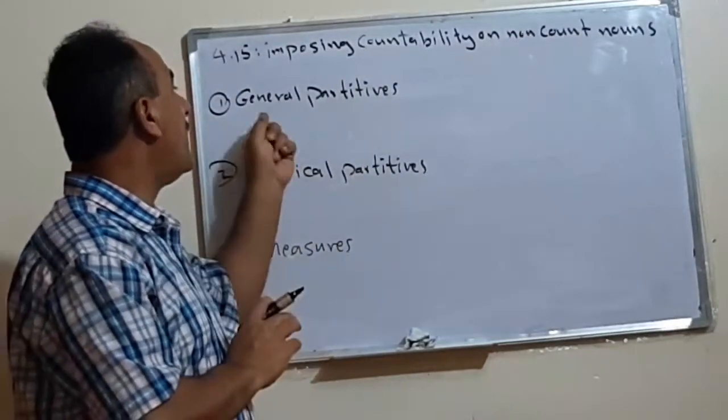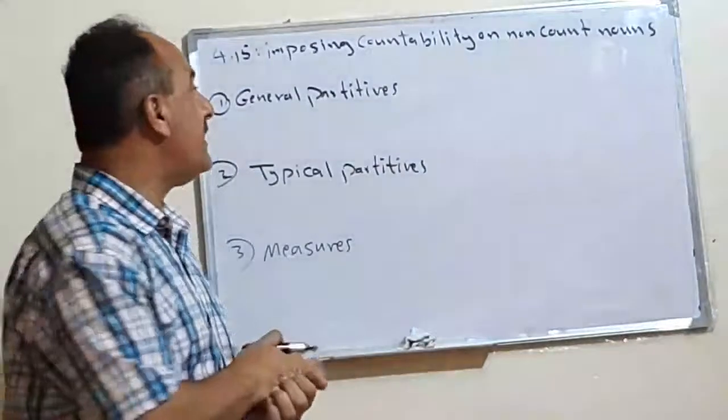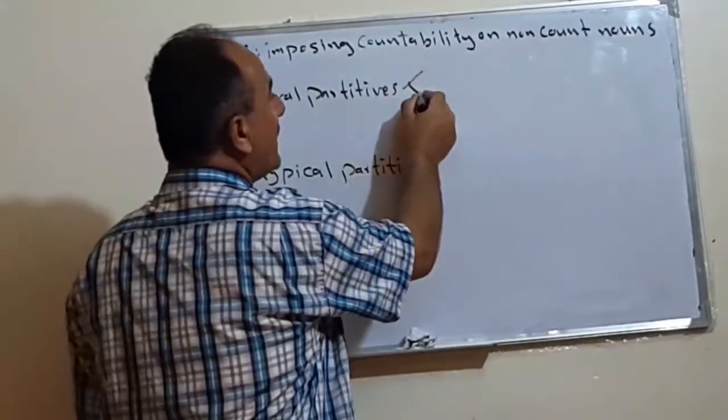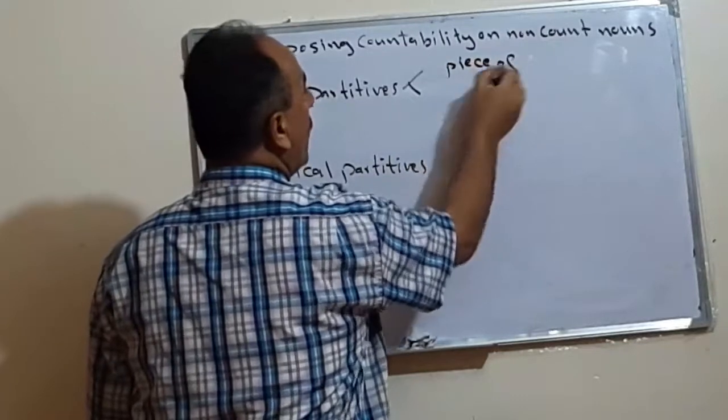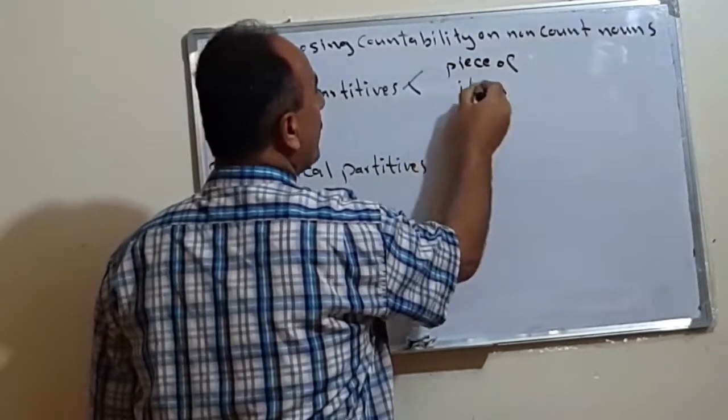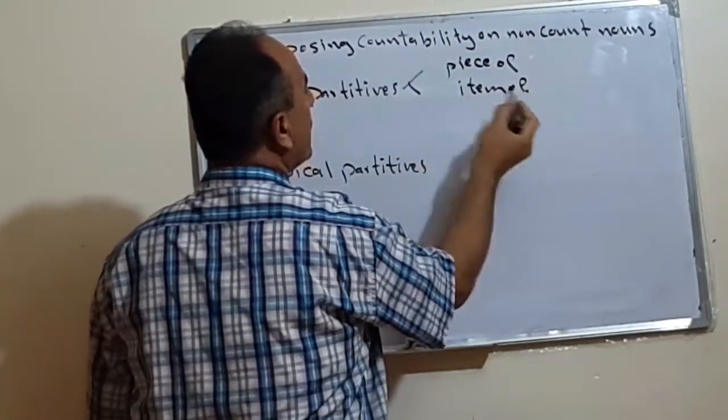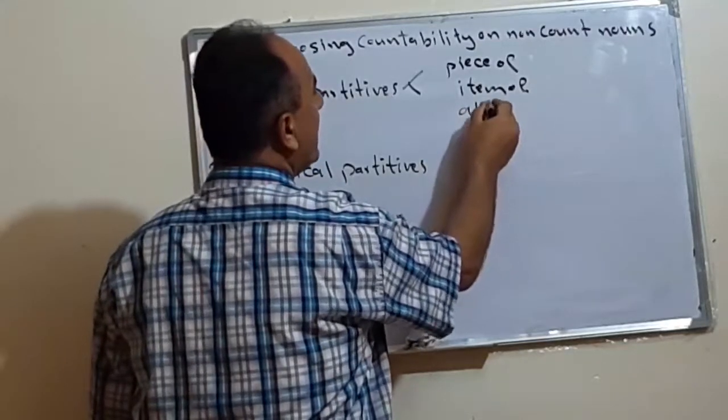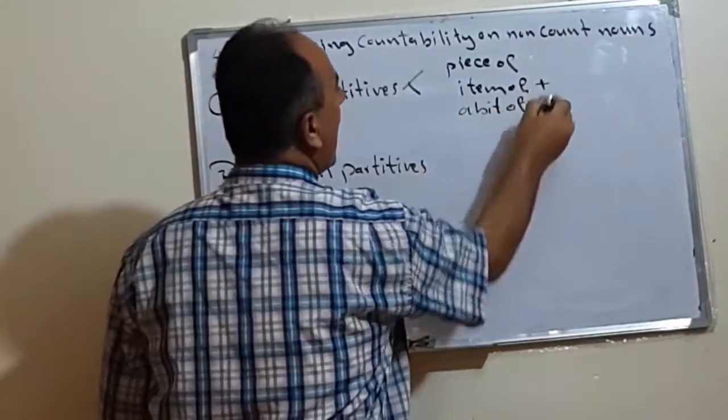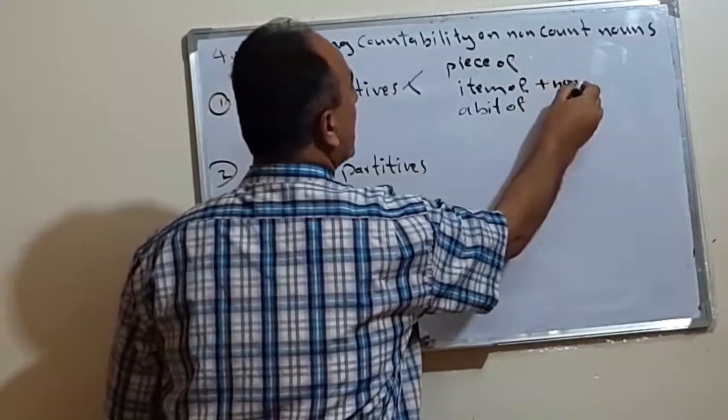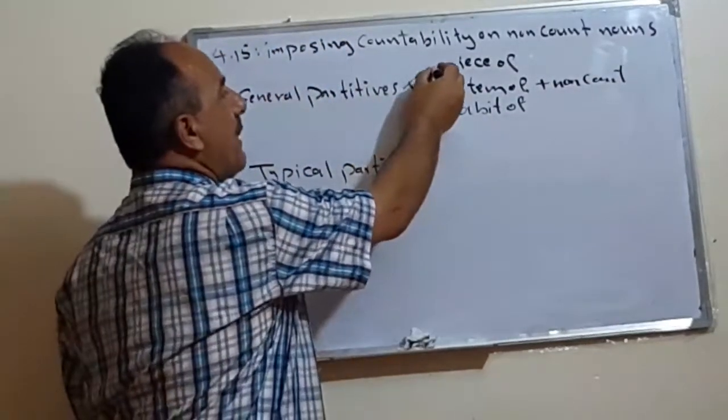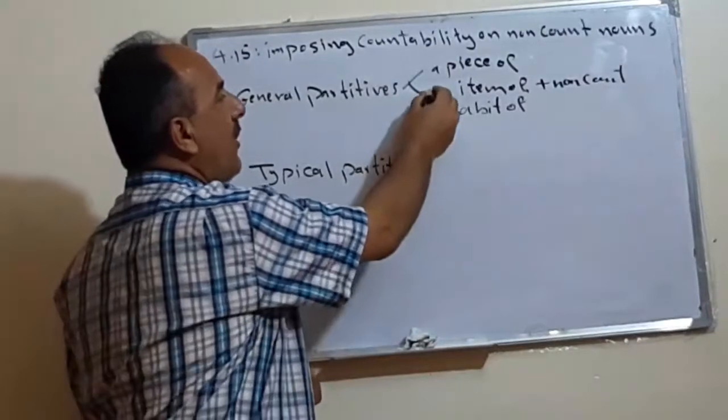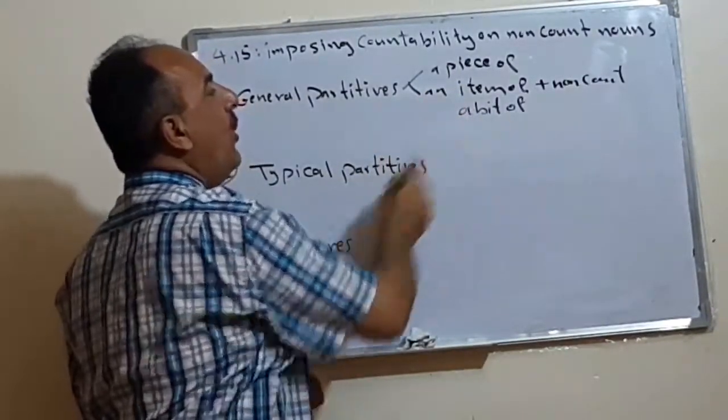The first one is what we call general partitives, means we can use three items: either say piece of, or item of, or a bit of. Then we have what? We have non-count. So either we use a piece of, or an item of, or a bit of.